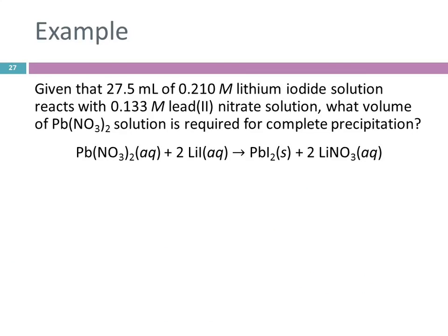Given that 27.5 milliliters of 0.210 molar lithium iodide solution reacts with 0.133 molar lead(II) nitrate solution, what volume of lead nitrate solution is required for complete precipitation? Wow, right? We can do this. This is stoichiometry, and we're going to use the equation, and we're going to pull those numbers out and write them down so that we can see what we're dealing with. Because there's all these names and formulas all over the place.